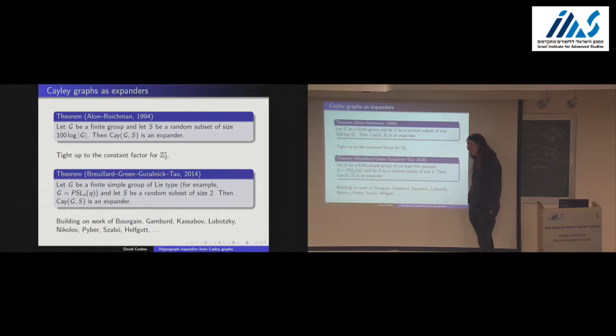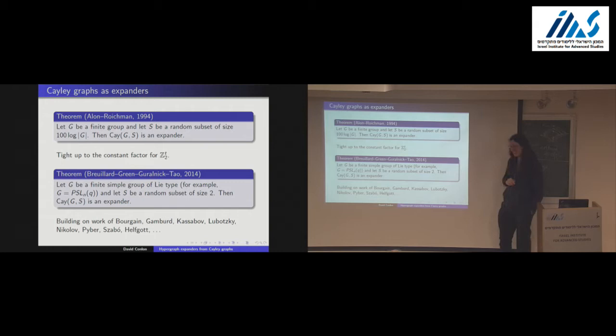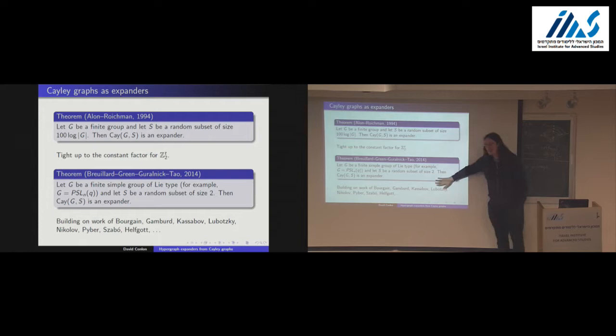Every finite simple group has a fixed K such that all finite simple groups have K generators which produce an epsilon-expander with the same epsilon. You can ask the same question for random generators, and there's even a question about worst-case generators. The actual thing I'm going to use is the Alon-Roichman theorem rather than this — I just wanted to advertise these results.